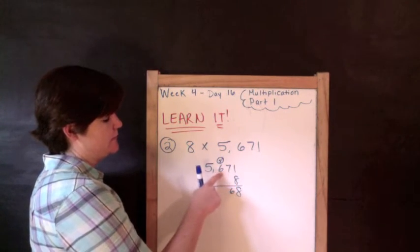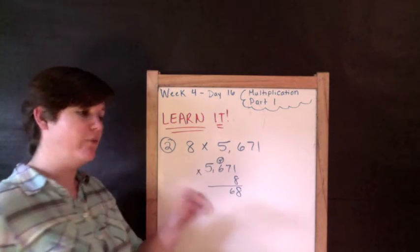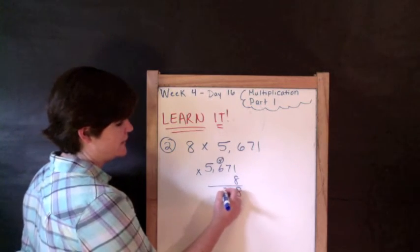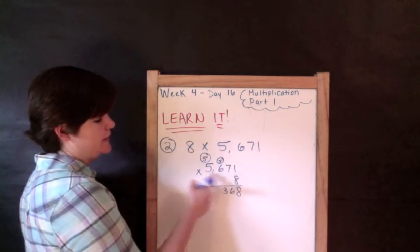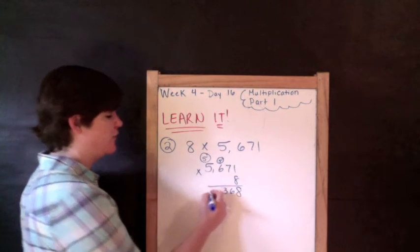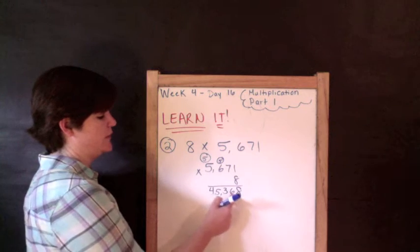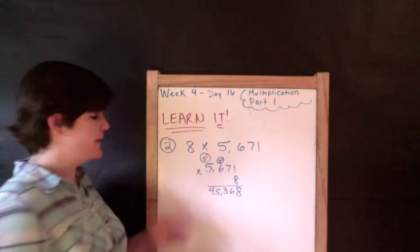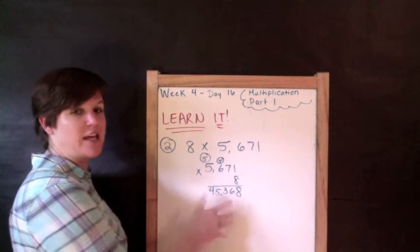8 times 6 is 48 plus 5 is 53. 8 times 5 is 40 plus 5 would be 45. There we go: ones, tens, hundreds, thousands. And that makes sense because this is almost 6,000, and 6,000 times 8 would be about 48,000. So it makes sense that it's 45,368.